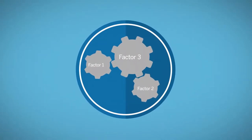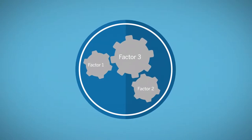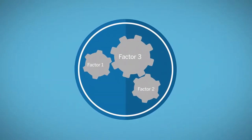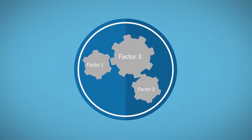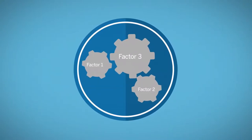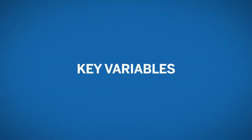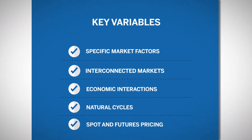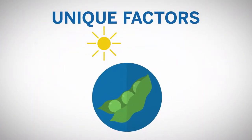Factors that affect supply and demand are numerous and highly interrelated, and market behavior is complex. Traders must focus on a few key variables that they feel are the most important influencers of the price of a specific commodity. Five of these factors include: unique factors for a specific market, interactions with other interconnected markets, interactions with the broad economy, natural cycles, and spot and futures pricing.